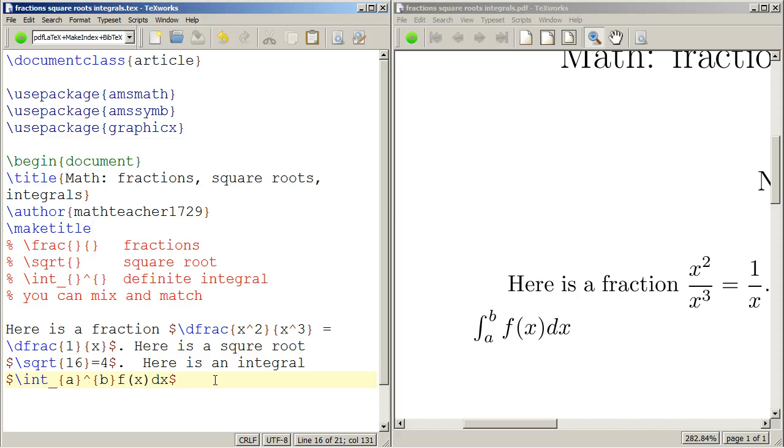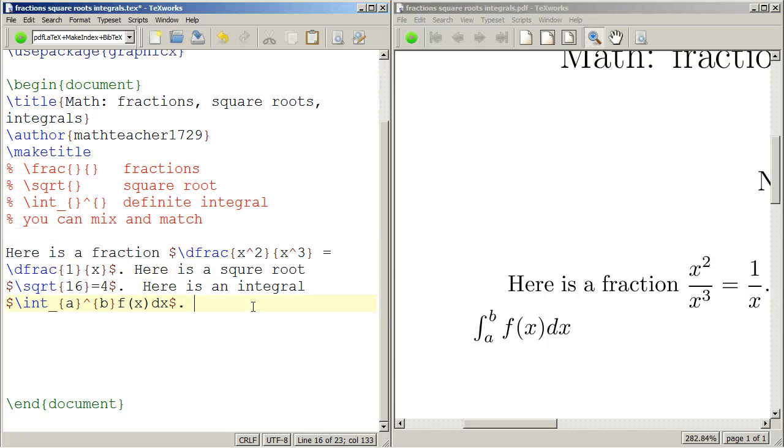Also, you can mix and match. So let's say we wanted to do something like the quadratic formula. x equals fraction. Now the numerator is b squared.